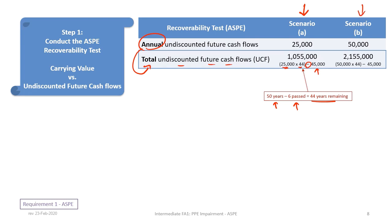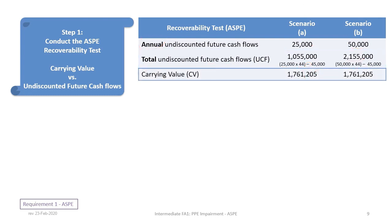Under Scenario B, the only change is the annual cash flow of $50,000: ($50,000 × 44) − $45,000 = $2,155,000 in total undiscounted future cash flows. The carrying value of $1,761,205 is the same under both scenarios.